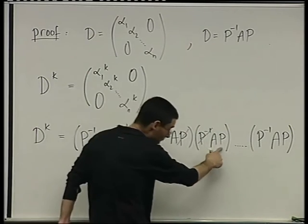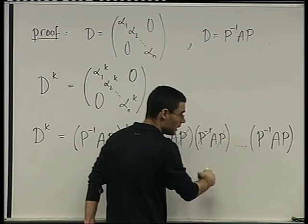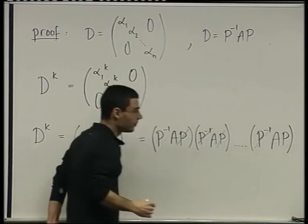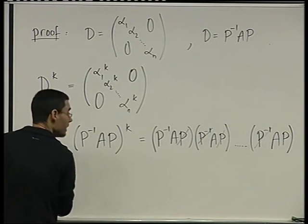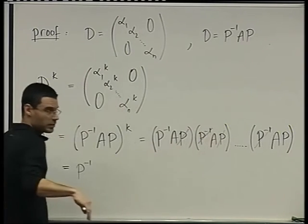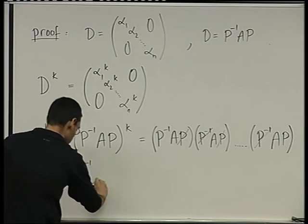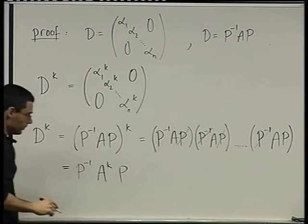And this P and this P inverse cancel. All the way to here. So what we're going to be left with is P inverse. All the P and P inverses in the middle canceled out. So we're left with A to the power of K, P. Do you agree?